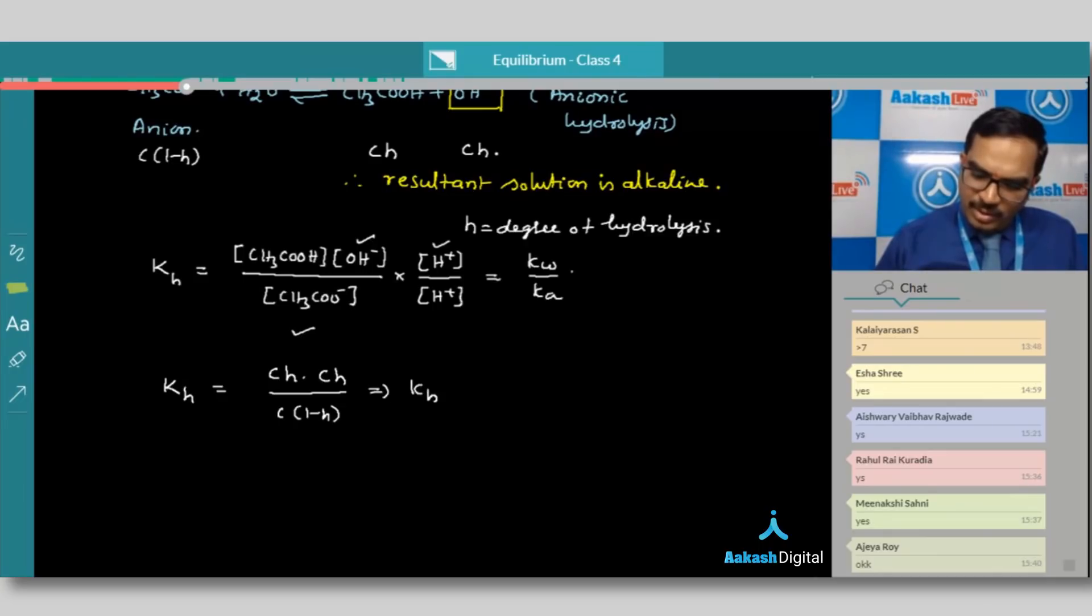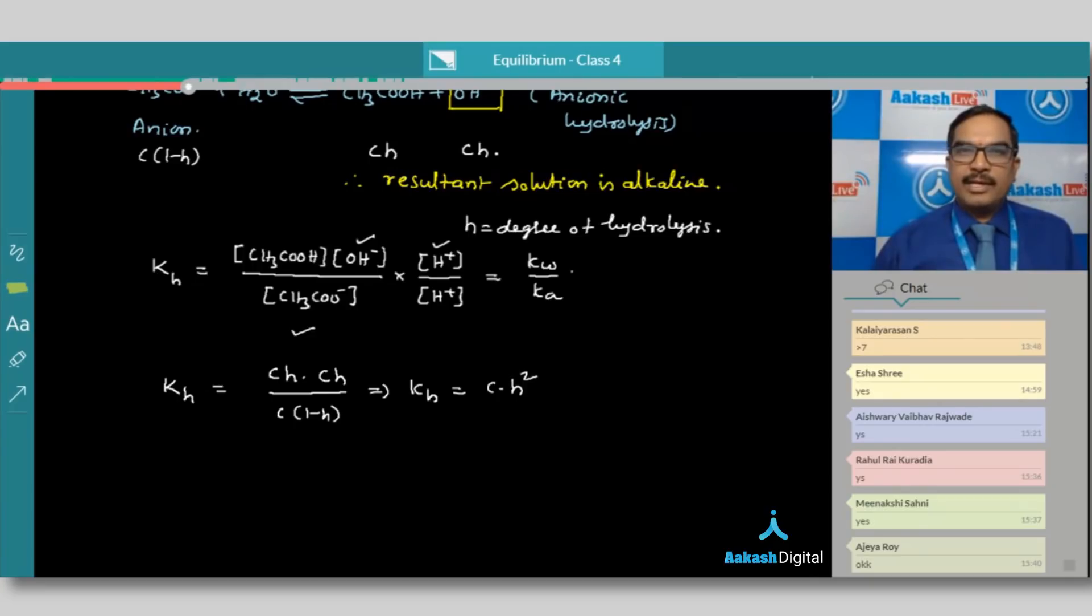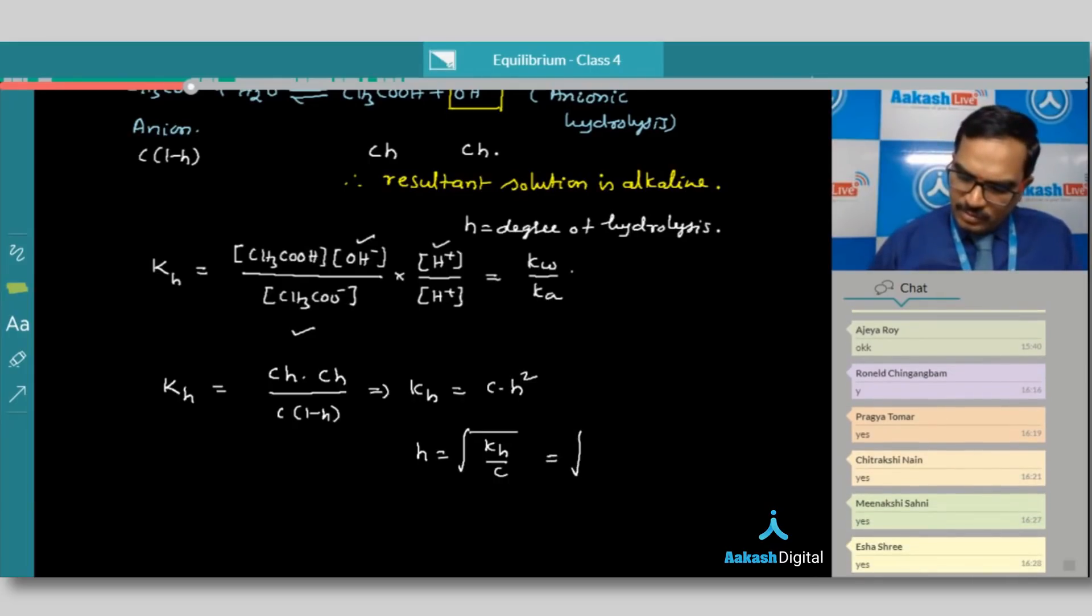So from this, we can have Kh is equal to C into h square. Because h is very, very small here. Degree of hydrolysis. So from this, can I get h is equal to square root of Kh divided by C. But what is Kh here? Square root of Kw by Ka into C. Is that right?